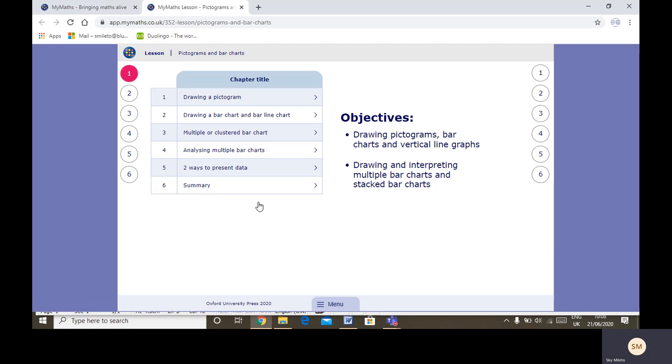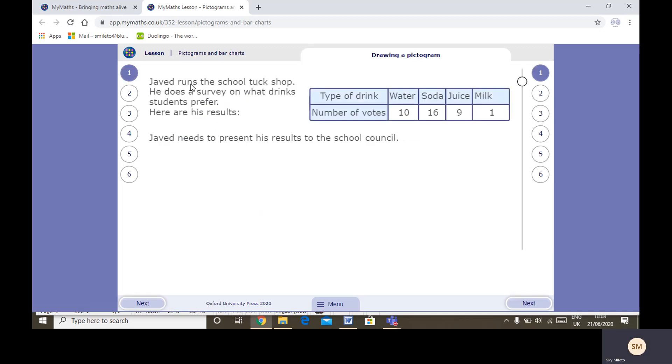Drawing our pictogram. Javid runs the school tuck shop. He does a survey on what drink students prefer. Here are his results. There's a table showing water, soda, juice and milk and the number of votes.